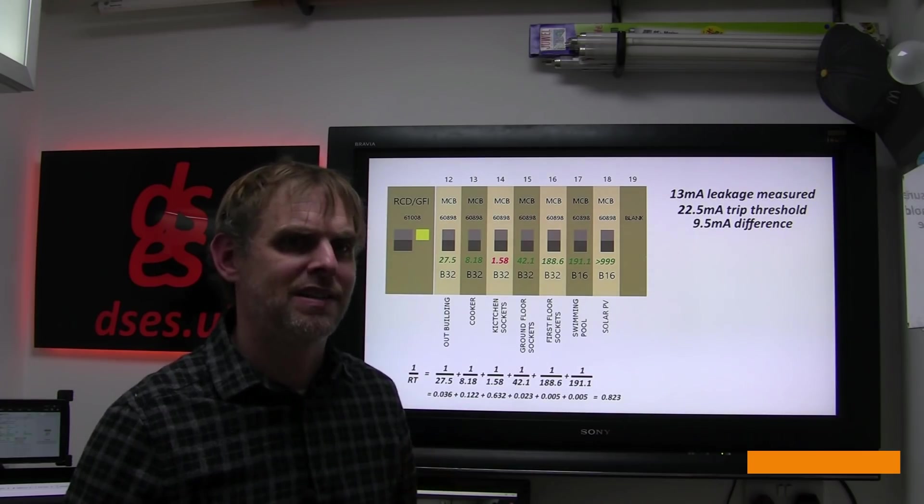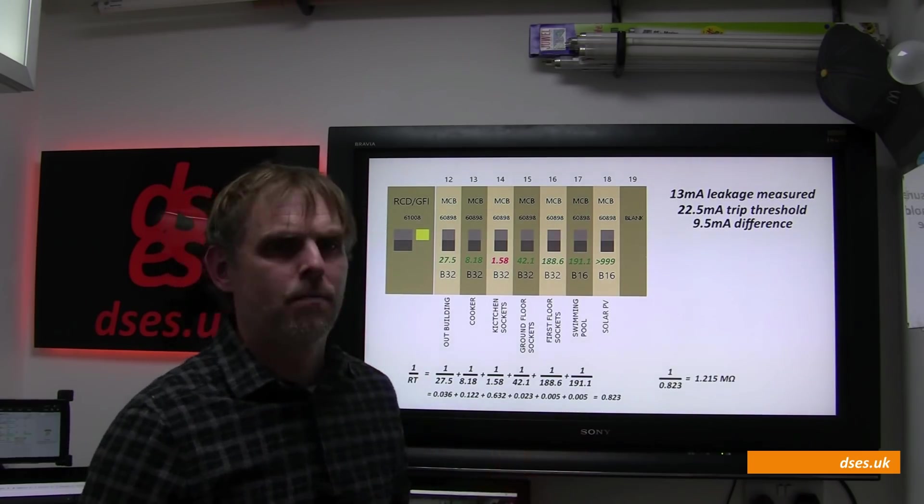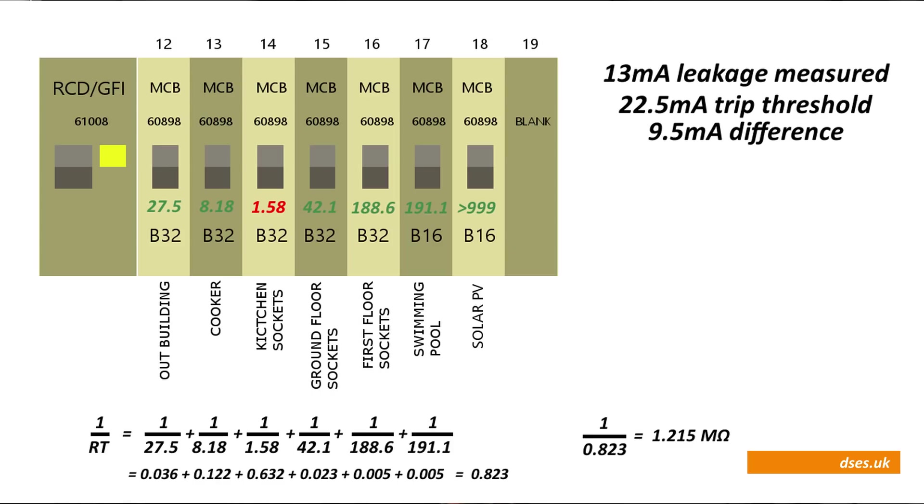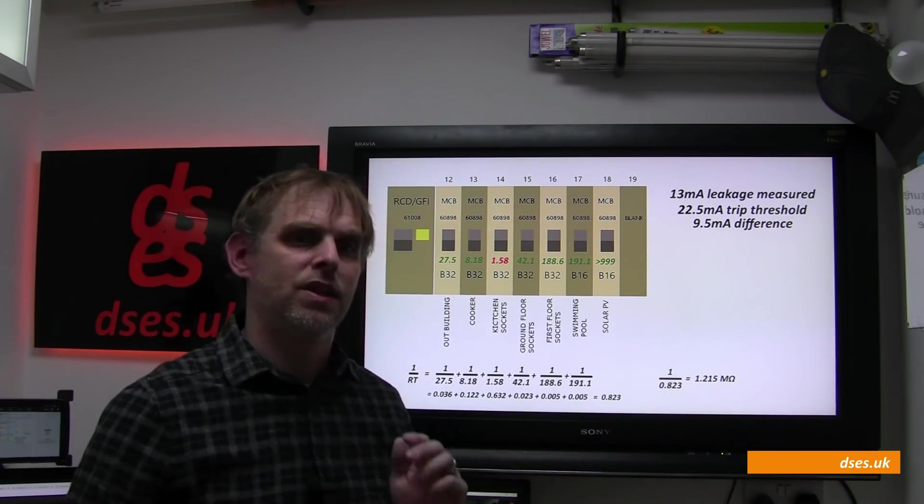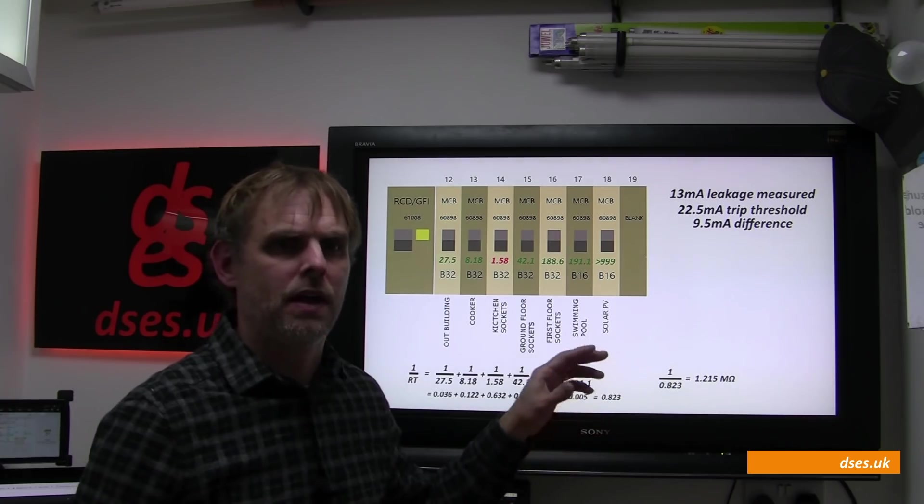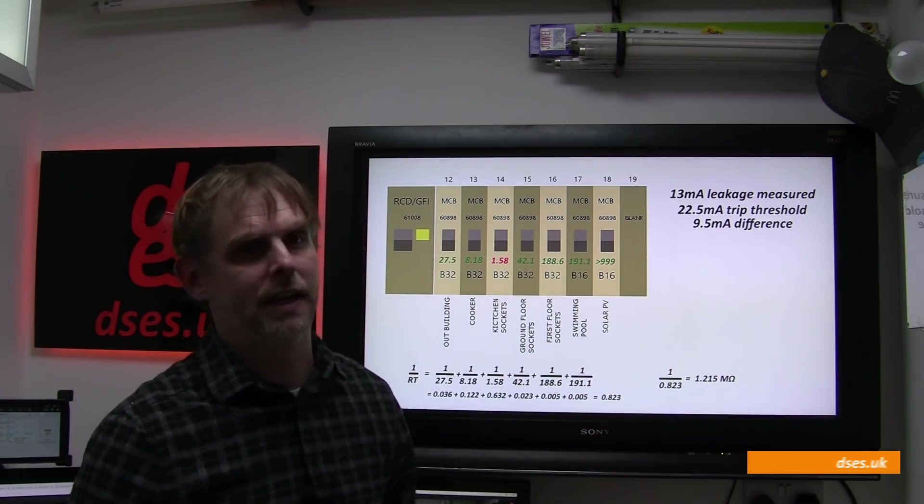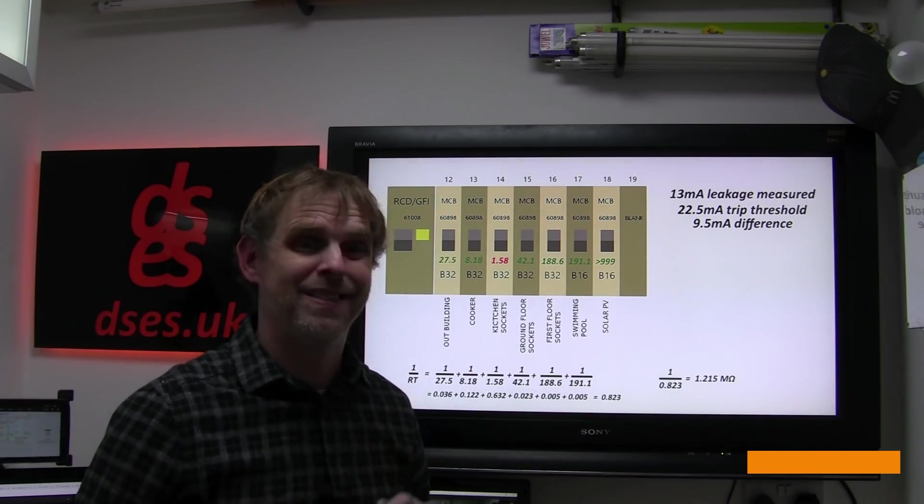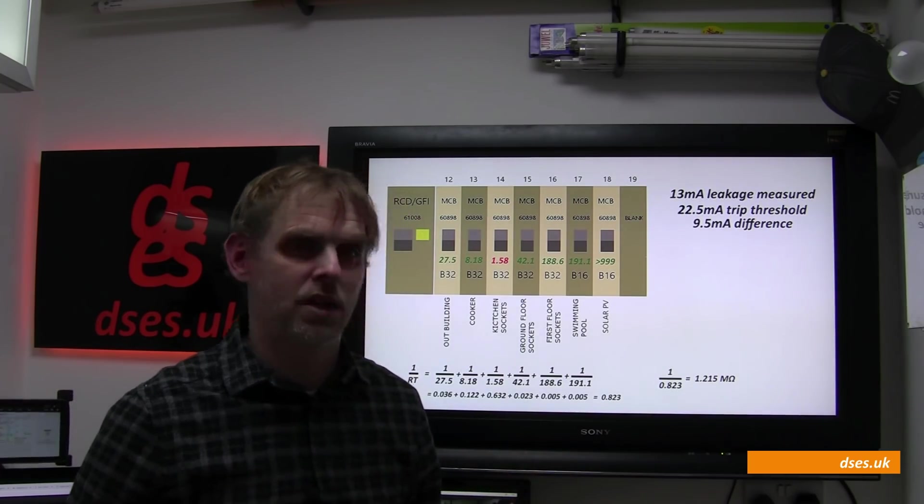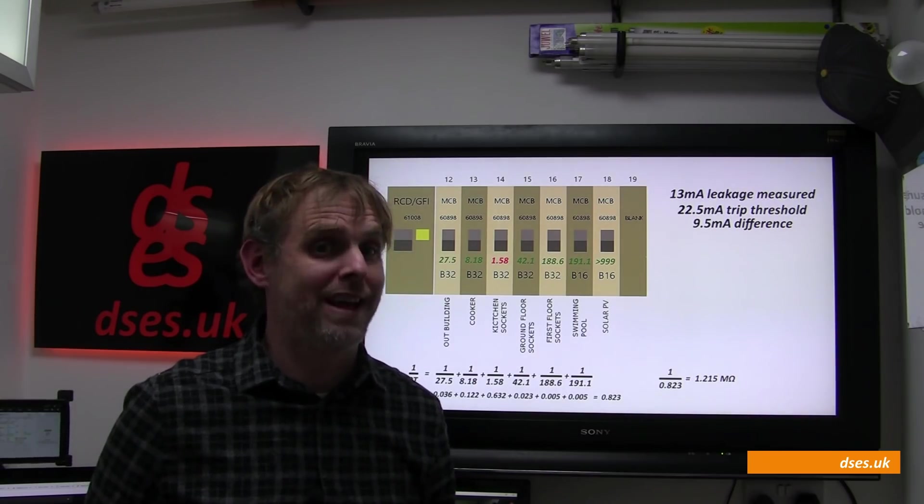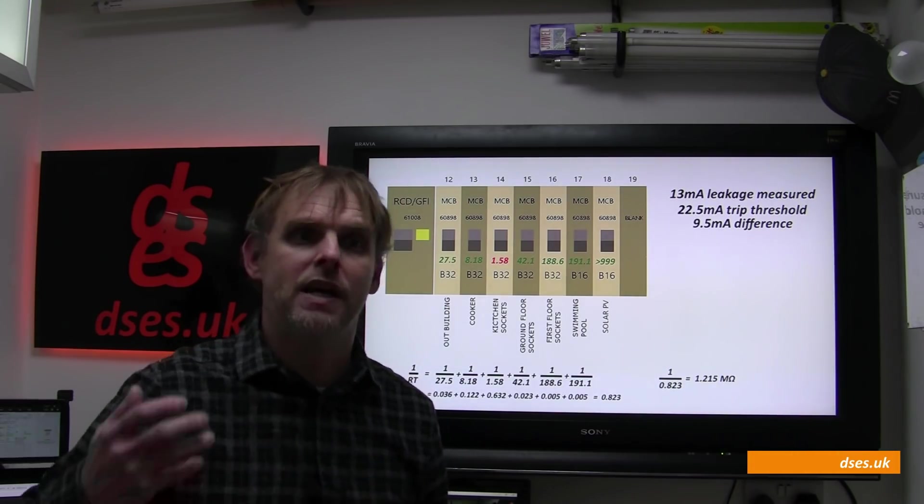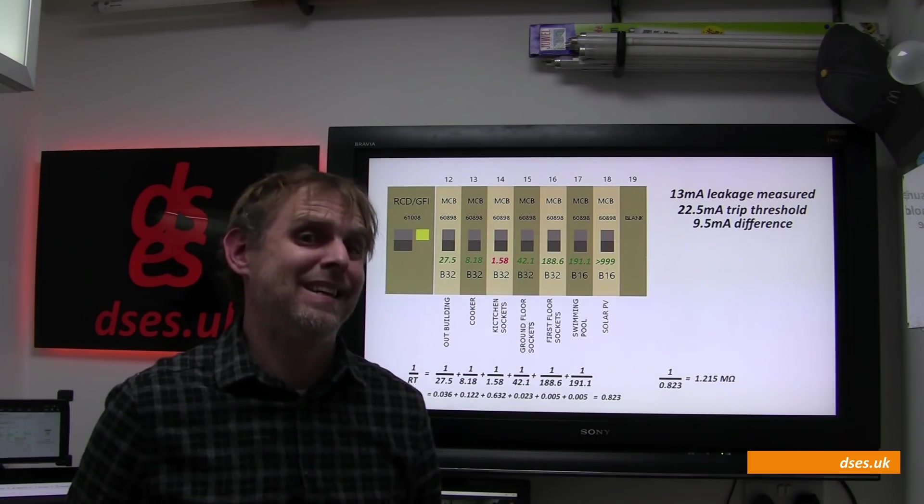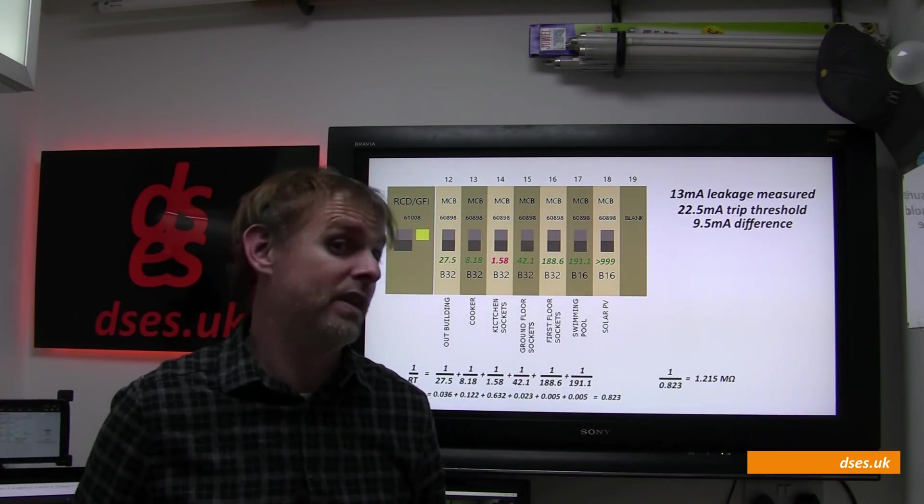To get the overall insulation resistance we need to take the reciprocal of this number, and if we do that we get a figure of around 1.22 megaohm, which is, as expected, lower than the lowest individual circuit IR, which we're seeing here on circuit 14. So as far as the RCD is concerned, the resultant insulation resistance it is being exposed to is at this time close to the minimum permitted by regulation 643.3.2. And remember, this is on a good day where the fault isn't currently present, so it wouldn't take much of a decline on any of these circuits to pull the resultant IR down even further. And a reduction in the resistance allows a rise in earth leakage current, and we already know we only need another 9.5 milliamps before we hit the threshold of this particular RCD.